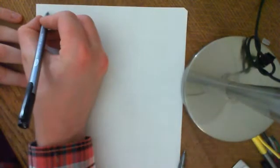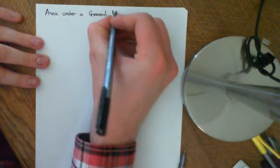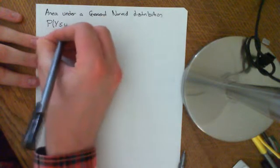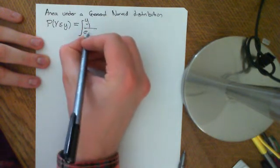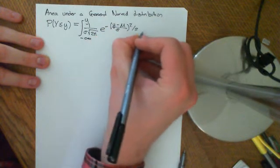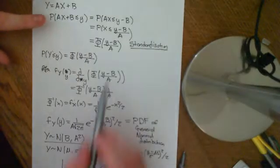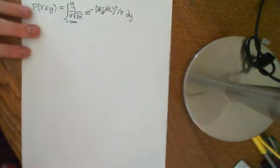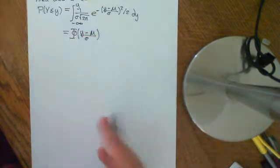Just to recap: if I want the area under a general normal distribution — the probability that big Y is less than or equal to little y — that equals the integral from negative infinity to y of 1 over sigma times the square root of 2π, times e to the negative (y minus mu) over sigma, squared, over 2, dy. We know this equals phi of (y minus mu) over sigma, which is how we derived the PDF in the first place. Let's verify that from the integral by going back the other way.